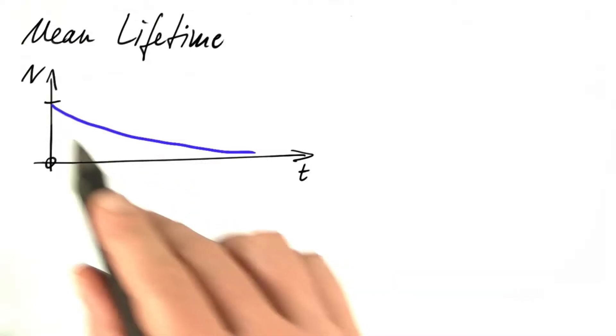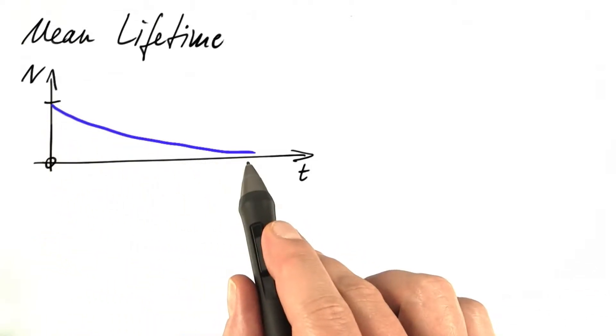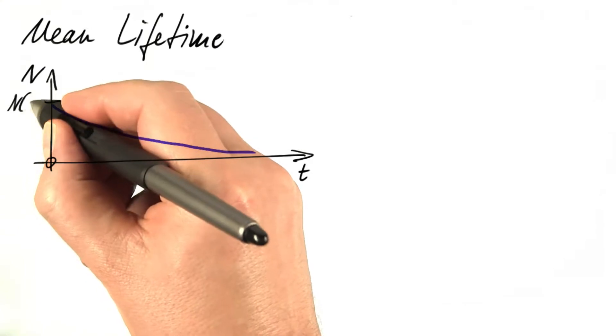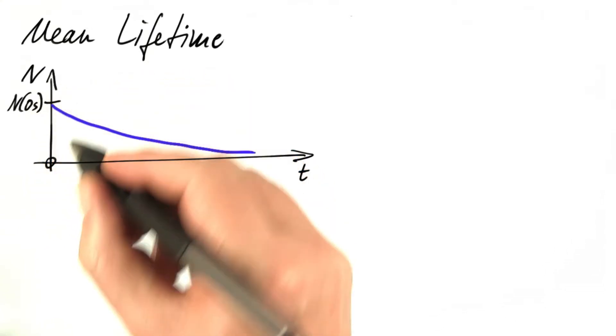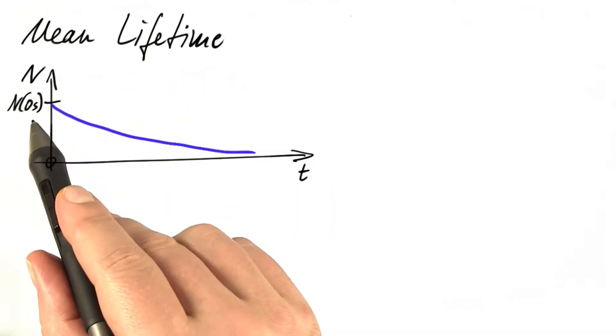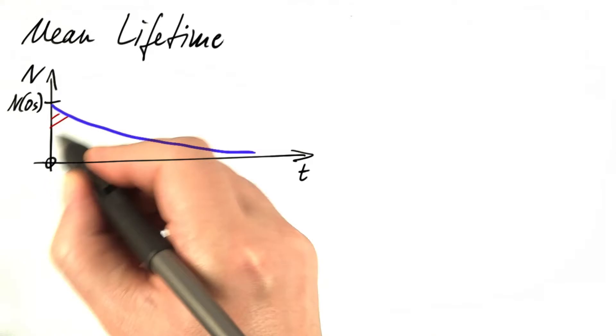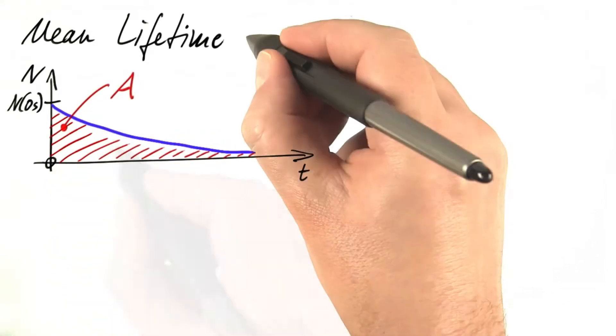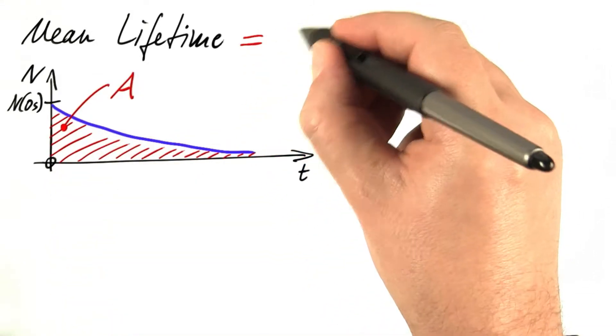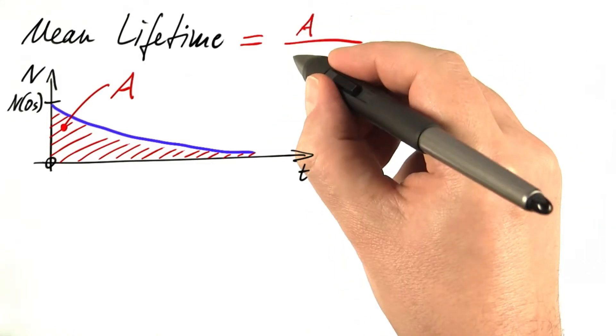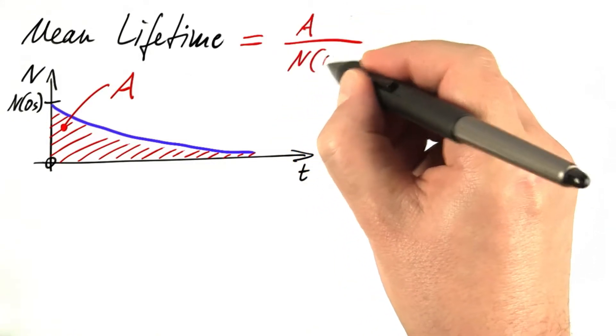Now let's try to apply the same idea to the exponential decay. We start with some initial number of particles, n of 0 seconds, and decay smoothly with that exponential curve. If we have this area below that curve, it's easy to say that the mean lifetime equals that area divided by the initial number of particles.